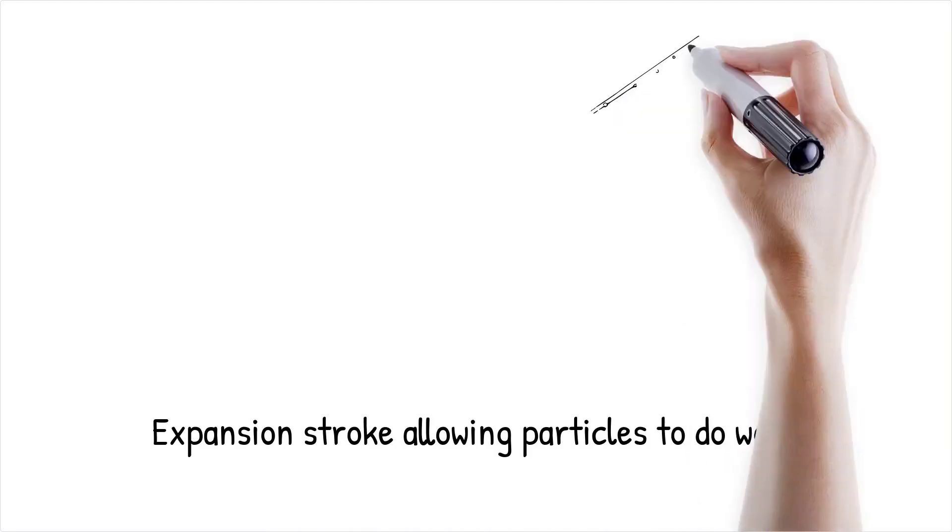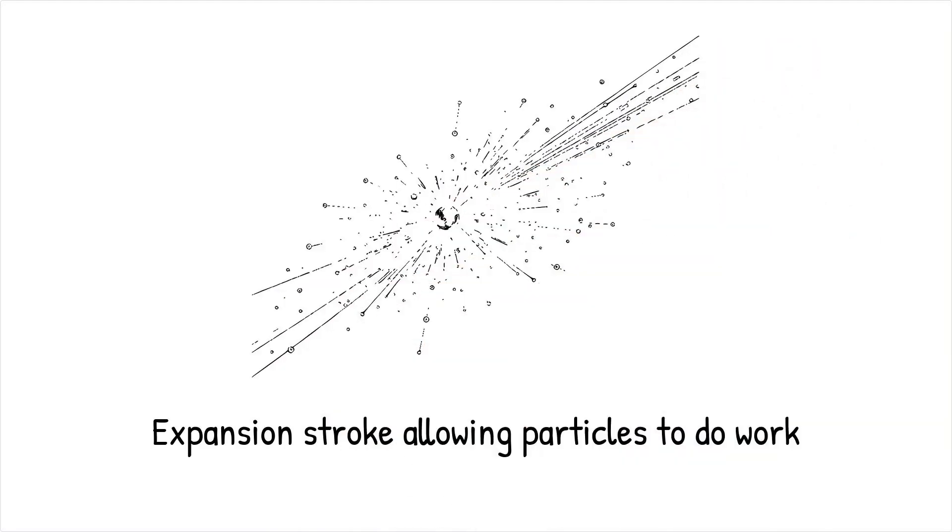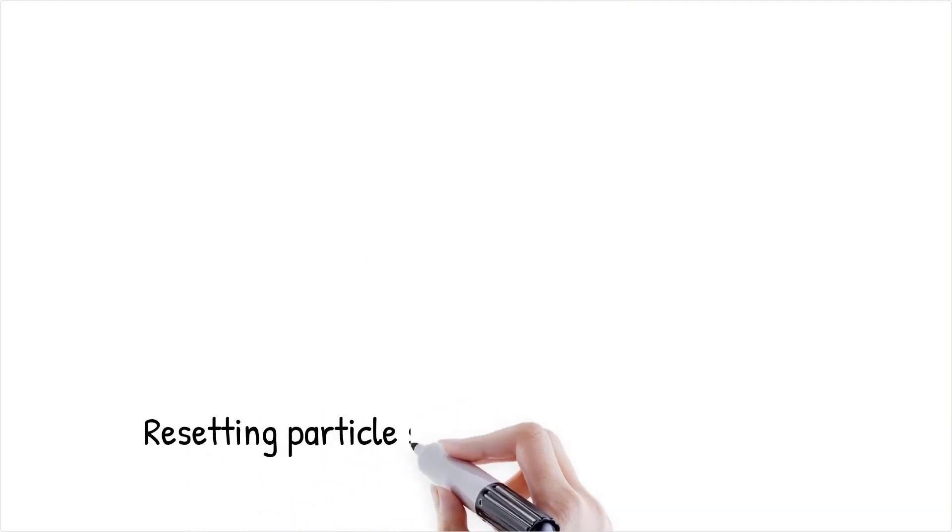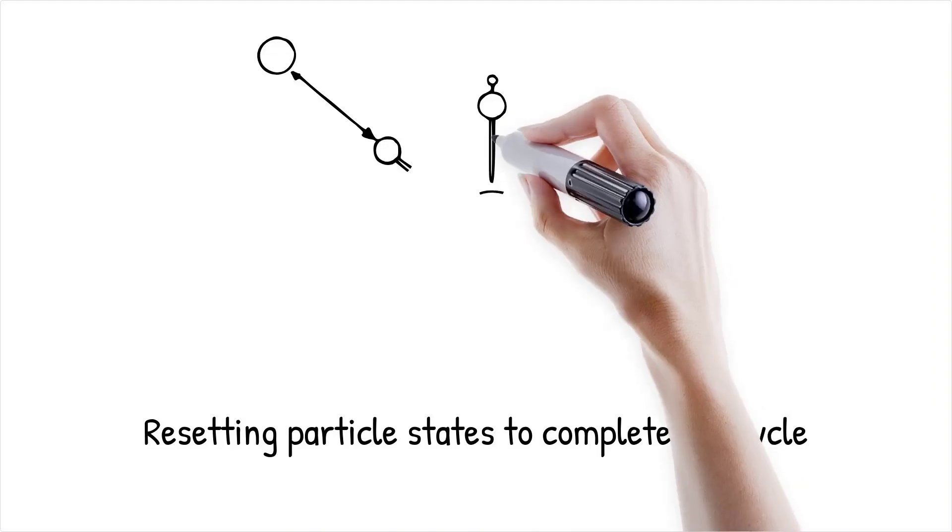Three: expansion stroke. The optical trap is relaxed, allowing particles to do work as they expand. Four: resetting states. The particles are returned to their original state, completing the cycle.